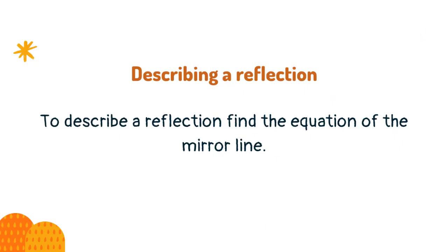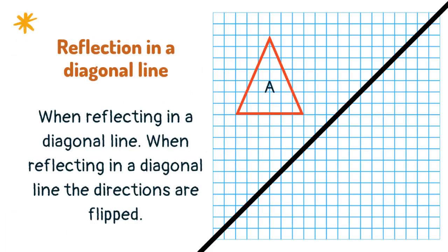To describe a reflection, find the equation of the mirror line. When reflecting in a diagonal line, the directions are flipped. This will be discussed in more detail in the next slide.